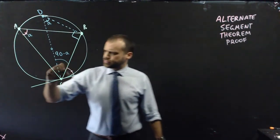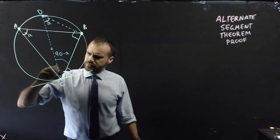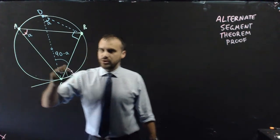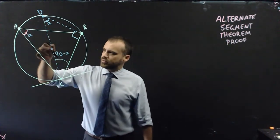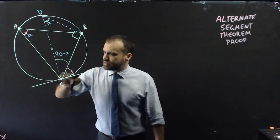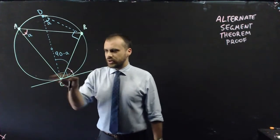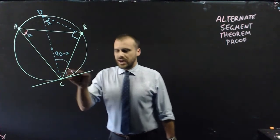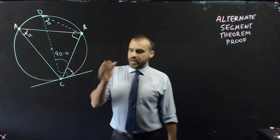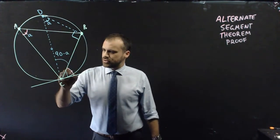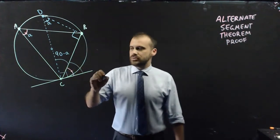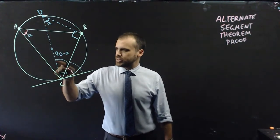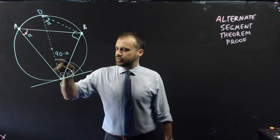We know that this is 90 degrees. Why do we know that that's 90 degrees? Because it's a line from the center to a tangent, and a line from the center is always going to meet at a 90 degree angle. And if that's 90 degrees, this bit here is going to be equal to that 90 degrees minus that angle there.